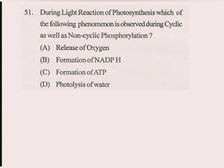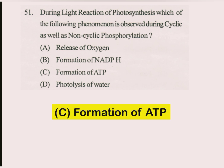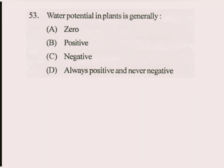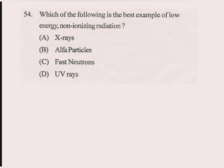Question number 51. During the light reaction of photosynthesis, which of the following phenomena is observed during cyclic as well as non-cyclic phosphorylation? The answer is: formation of ATP. Question number 52. Parenchymatic cells surrounding the hydathodes of leaves are called epithem. Question number 53. Water potential in plants is generally negative. Question number 54. Which of the following is the best example of low-energy non-ionizing radiation? UV rays.